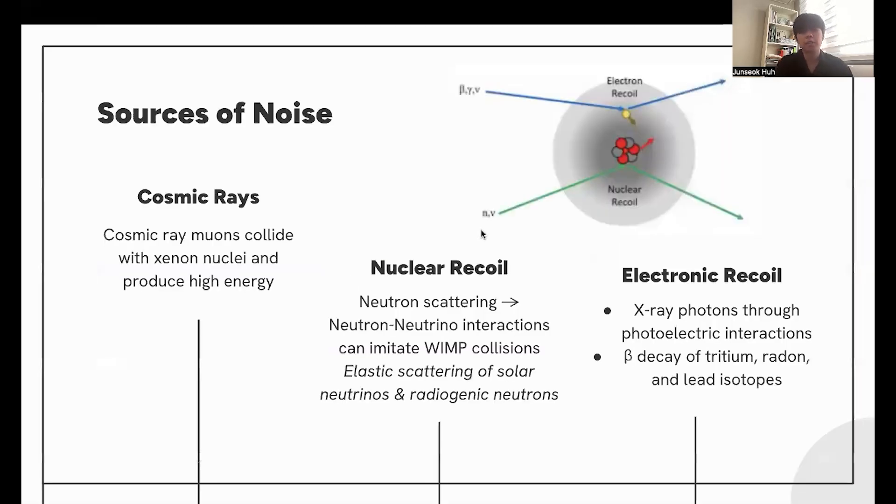Another important aspect of this experiment would be to eliminate noise and to extract only the signals that relate to WIMP and Xenon atom collisions. Different sources of noise include cosmic rays, since cosmic ray muons may collide with Xenon nuclei and produce high energy, similar to how the cloud chamber functions. Nuclear recoil, pertaining to the neutron scattering in cases of neutron-neutrino interactions, can imitate WIMP collisions.